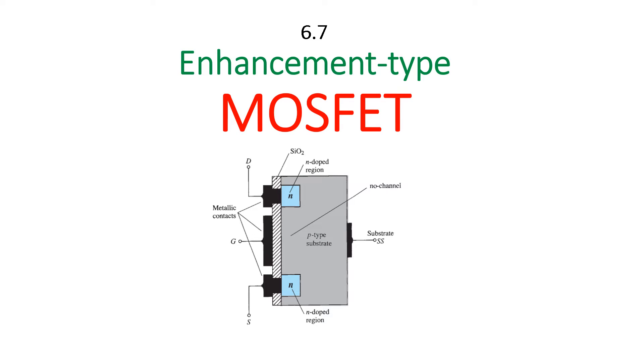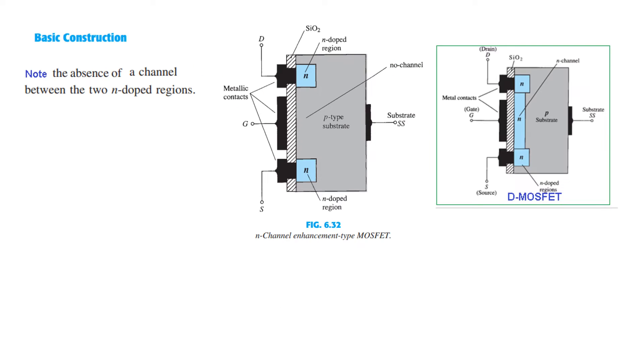In this video we will discuss enhancement type MOSFET. If you recall the depletion MOSFET, in the depletion MOSFET there was a channel built in. But in case of an enhancement MOSFET there is no built-in channel between the two doped regions.